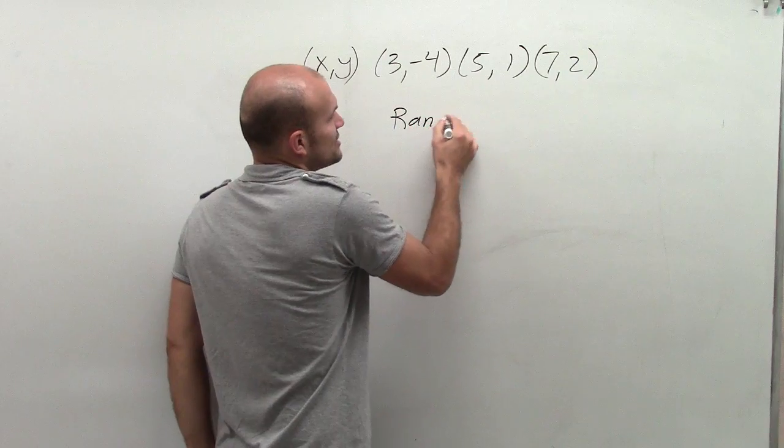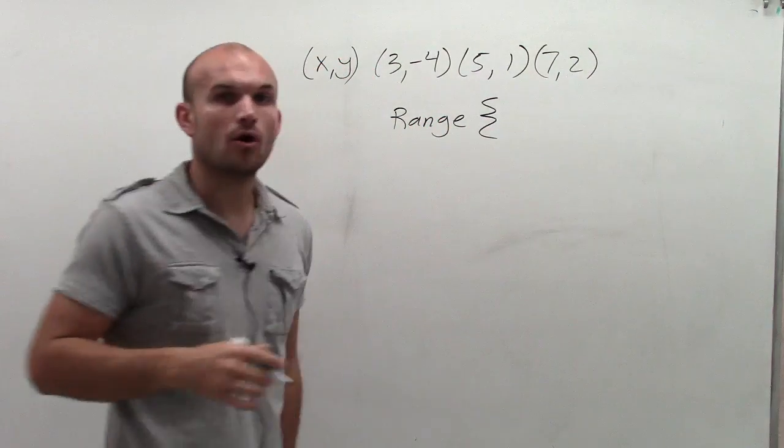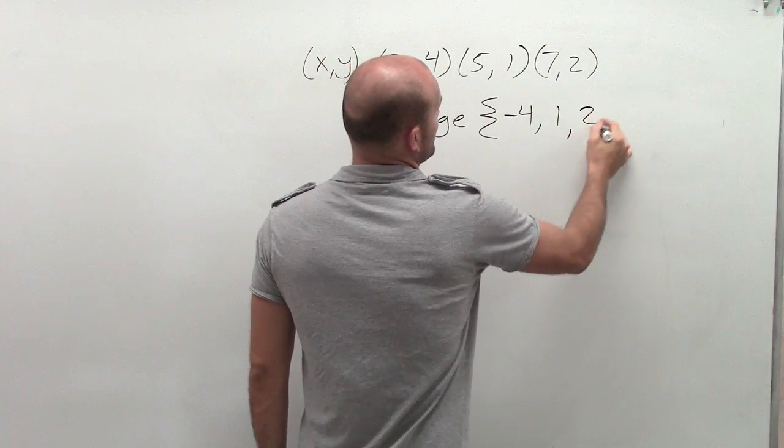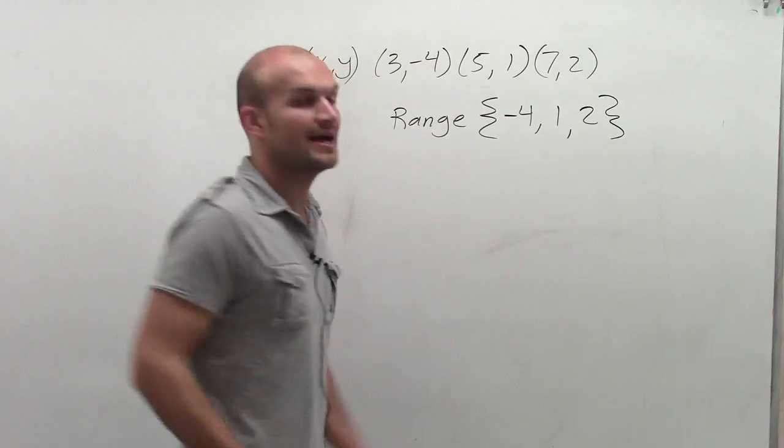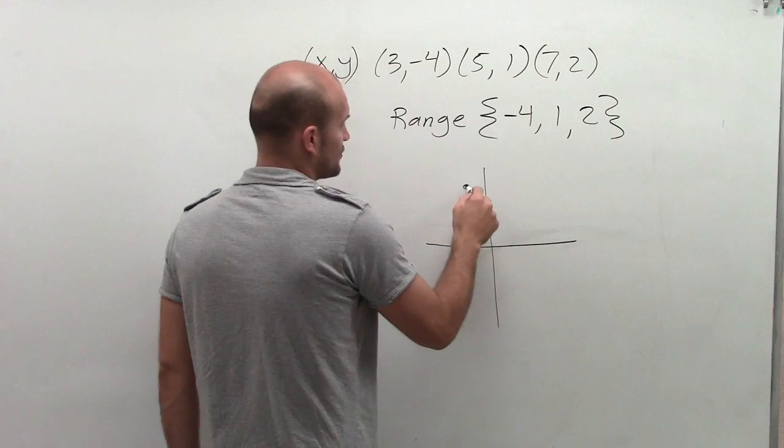So my range is going to be the output values, or the y-coordinates in this instance, which would be negative 4, 1, or 2. And this works exactly the same if I was going to have a graph.